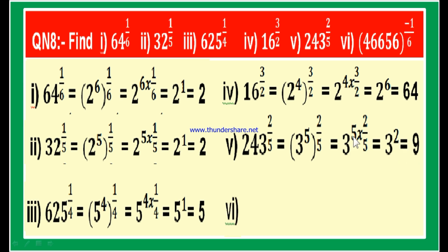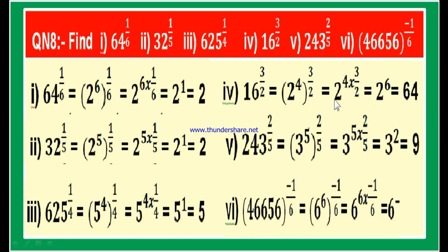Sixth part: 46656 to the power of minus 1 by 6. If you prime factorize 46656, you get 2 power 6 into 3 power 6, which is nothing but 6 power 6. So this is 6 power 6 whole to the power of minus 1 by 6, which equals 6 power minus 1, and 6 power minus 1 equals 1 by 6. We used the laws of exponents to solve all these values.